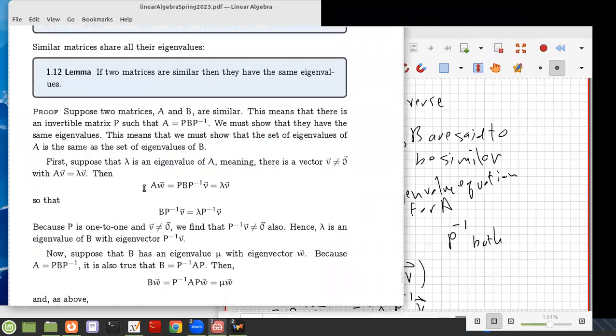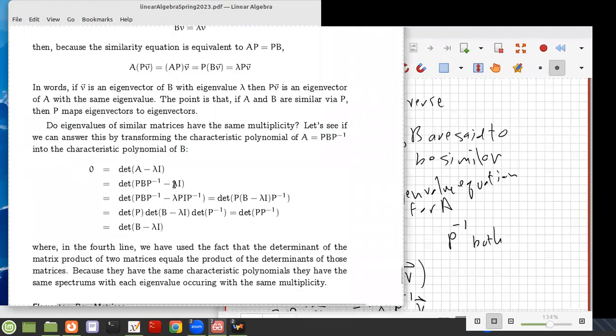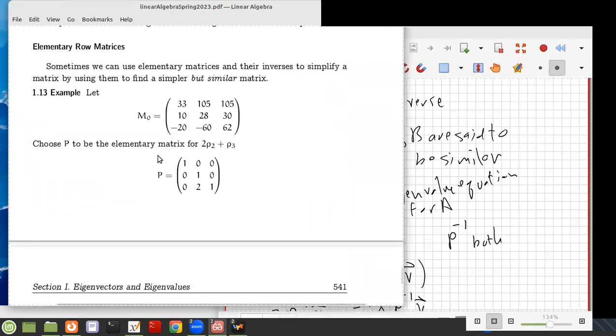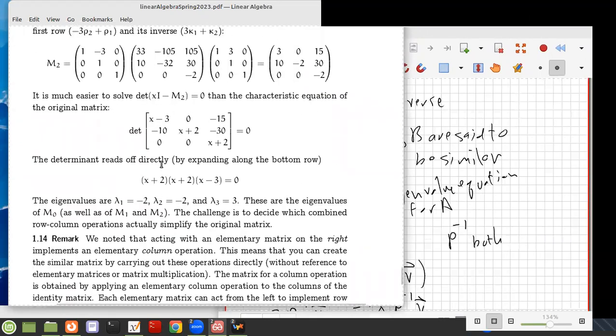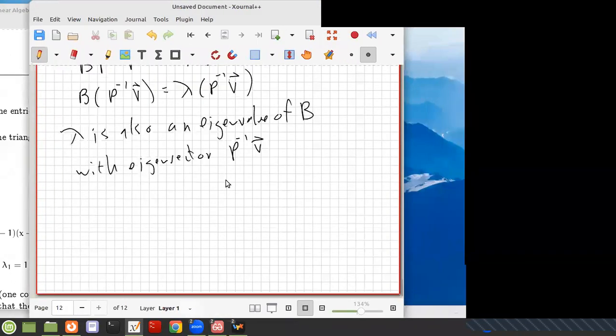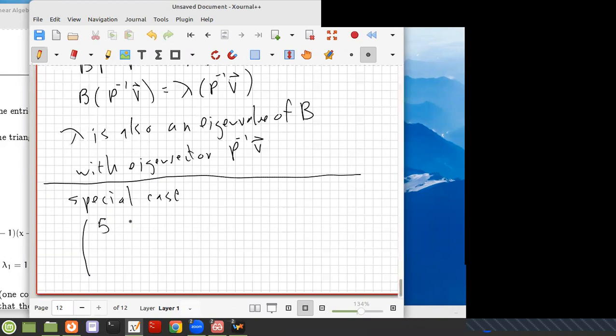Now, let's go through and demonstrate that they have the same eigenvalues. Let's look at another special case of a matrix. A special case here. Let's say we have the matrix, say 5, 6, 7, 0, 8, 9, 0, 0, 4. So this is the matrix U. It's upper triangular.